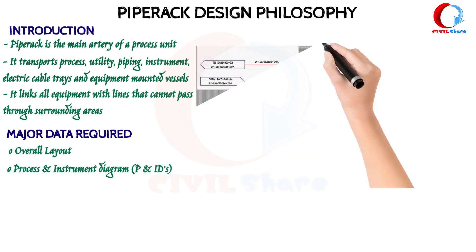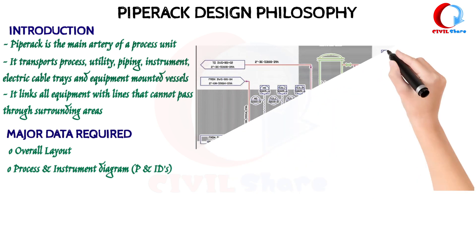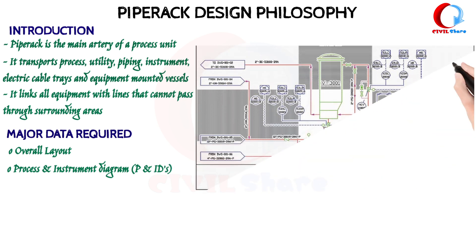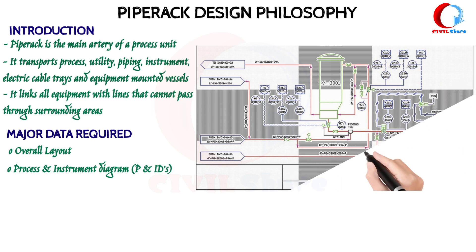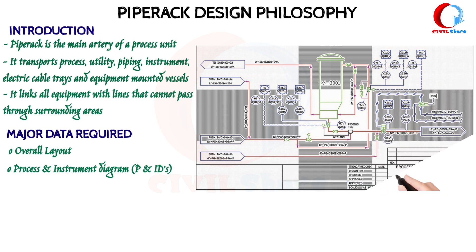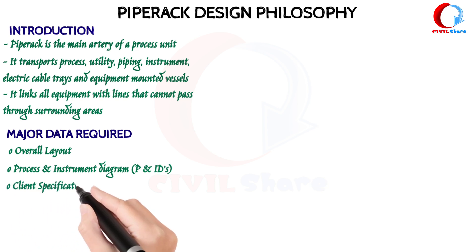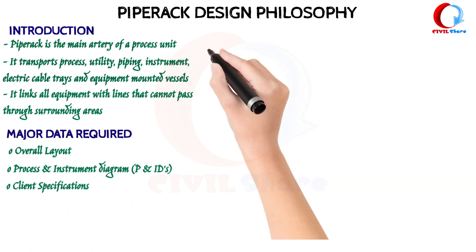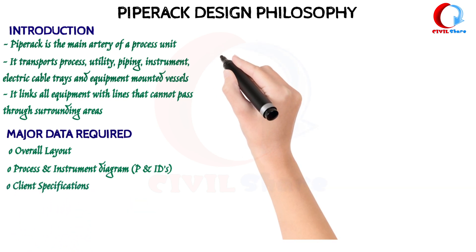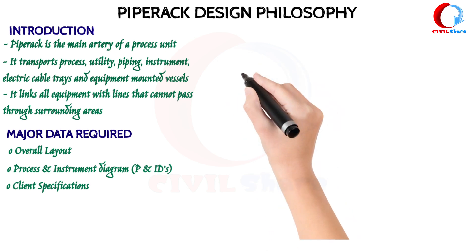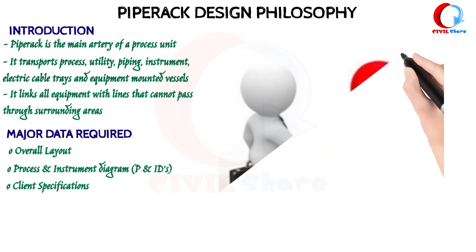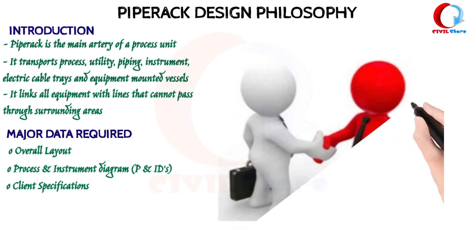Process and Instrument Diagram (P&ID): A P&ID is a graphical representation of a process system that includes the piping, vessels, control valves, instrumentation, and equipment systems. Client Specification is a document issued by a client that describes the requirements of a system and the expected services of a contractor.